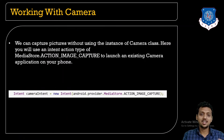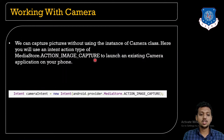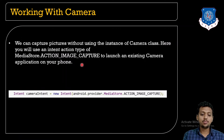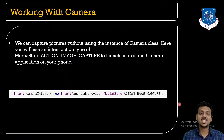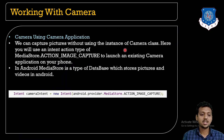We can capture pictures without using an instance of the Camera class. Here you will use an intent of the action type known as MediaStore.ACTION_IMAGE_CAPTURE to launch the existing camera. For that you just need to write: camera_intent = new Intent(android.provider.MediaStore.ACTION_IMAGE_CAPTURE). This is the first method where we are not using the Camera object and can directly access the camera.